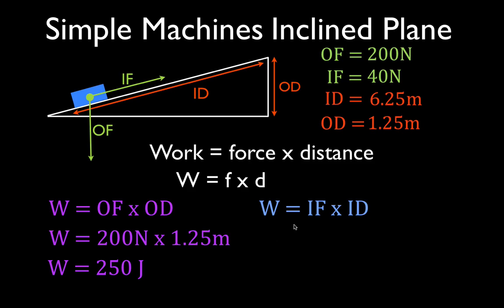And that is the metric unit for work and energy. Now, let's calculate the work the other way using the input force and the input distance. Work, therefore, is going to be 40 newtons times 6.25 meters.